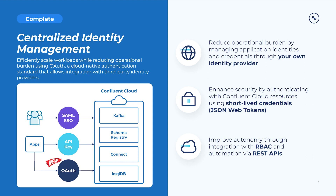Customers can also authenticate using short-lived credentials, such as JSON web tokens, and integrate with RBAC and automate via REST APIs. The release of OAuth on Confluent Cloud means customers no longer need user account APIs or basic authentication mechanisms that may not comply with their InfoSec standards. Confluent Cloud customers now have an industry-standard, secure way to build their shared services data streaming platform.